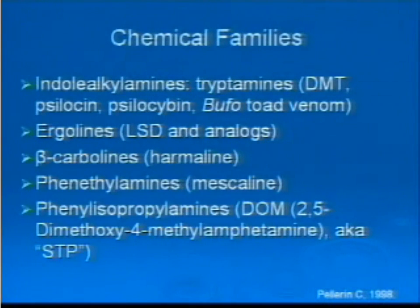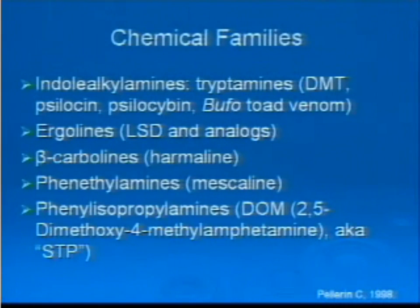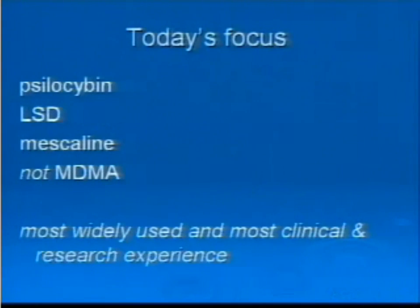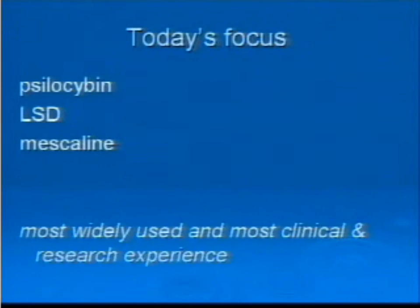which is 5-methoxy-DMT. The next family is the ergolines, which includes LSD and its natural and synthetic analogs. The next group is the beta-carbolines, which include harmaline, one of the active ingredients in ayahuasca. The phenethylamines include mescaline, the active ingredient in peyote. And finally we have the phenylisopropylamines, which includes DOM, also known as STP, popular back in the 60s. Today we're going to talk about psilocybin, LSD, and mescaline, as these are the most widely used psychedelics and we have the most clinical and research experience with them. I'm not going to talk about MDMA or ecstasy because that is an entire lecture unto itself.